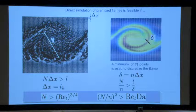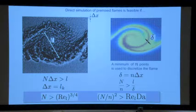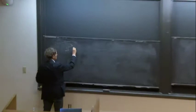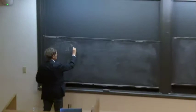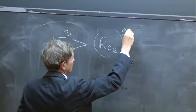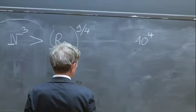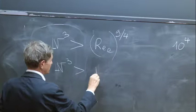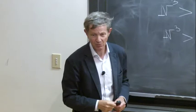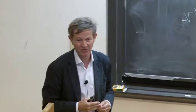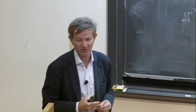In three dimensions, N³ should be bigger than Reynolds to the nine-quarter. So the first condition for fluid mechanics is N cubed should be bigger than the Reynolds number to the nine-quarter. For example, if you take a Reynolds number of 10 to the 4, it gives you a number of points N³ which should be bigger than 10 to the 9 — a billion points. It's really enormous: a billion points just to do a calculation at Reynolds number 10,000, which is not very large. Turbine flows of interest have much larger Reynolds numbers.